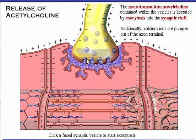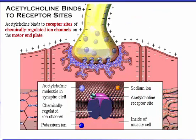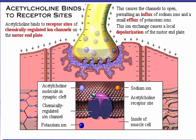The neurotransmitter acetylcholine binds to receptor sites of chemically regulated ion channels on the motor end plate. This causes the channels to open, permitting an influx of sodium ions and a small efflux of potassium ions. This ion exchange causes a local depolarization of the motor end plate, which will be indicated here as a glow. Click the acetylcholine molecule to start this process.